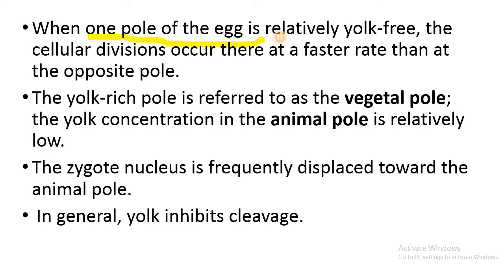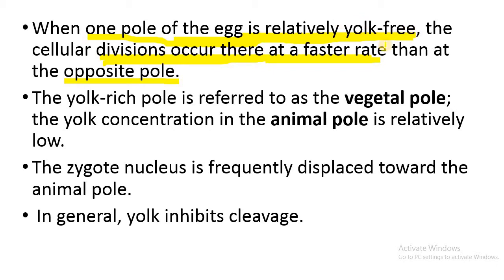When one pole of the egg is relatively yolk-free, cellular divisions occur there at a faster rate than at the opposite pole, where yolk concentration is relatively higher. So where yolk concentration is less or the cytoplasm is relatively yolk-free, cellular divisions occur faster.